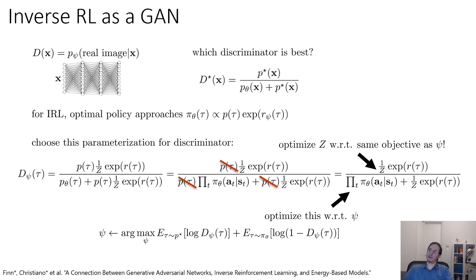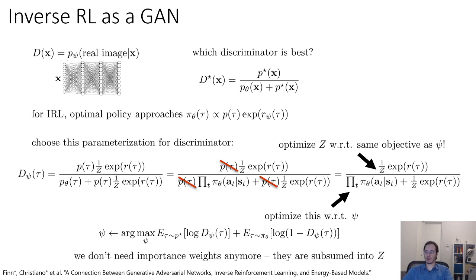It turns out this actually works if you optimize Z with respect to the same objective as psi. You don't actually have to calculate the partition function Z — you can optimize it as part of the same argmax, because that actually yields the correct answer. The derivation is a little more involved, but you can find it in the paper called 'The Connection Between Generative Adversarial Networks, Inverse Reinforcement Learning, and Energy-Based Models.' The interesting thing is that we don't actually need importance weights anymore — they're subsumed into the partition function Z, which we optimize along with our reward function parameters.